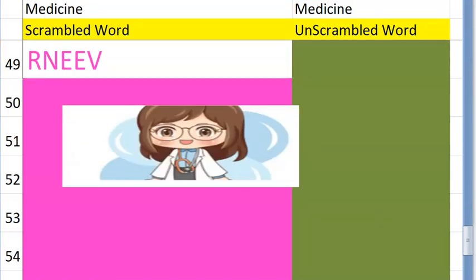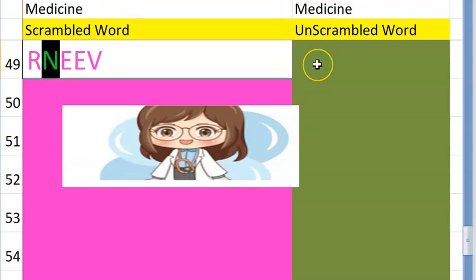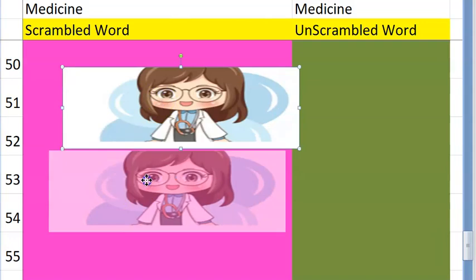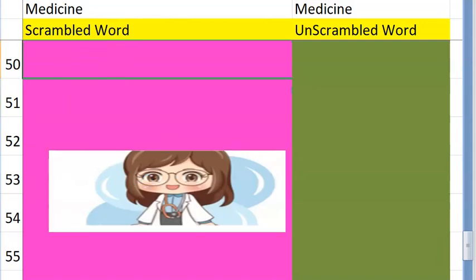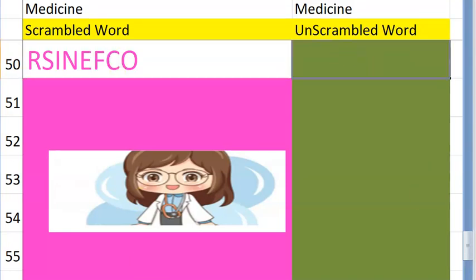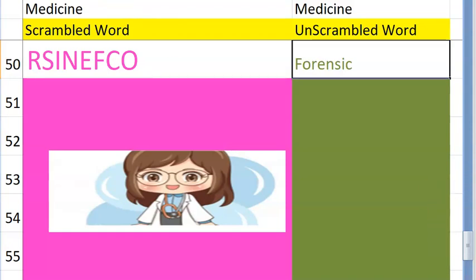The forty-ninth one starts with N — it's anatomy, something that you feel — nerve. Very good! Let's go to the fiftieth one — it begins with F, we just talked about autopsy — forensic medicine. Very good! We're done with 50, just 10 more to go!